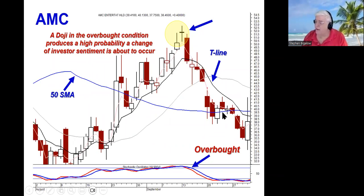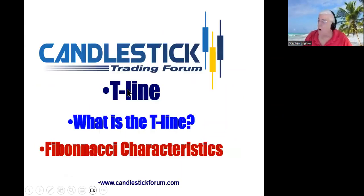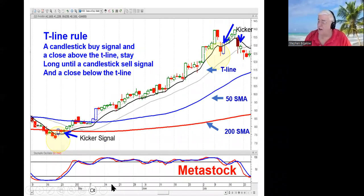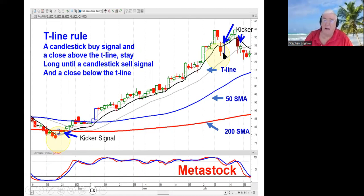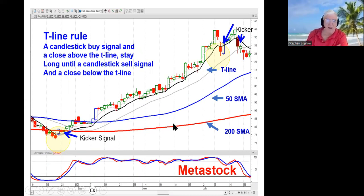Before I start the presentation, there are a couple elements you want to be aware of, and that's the T-line. The T-line is the eight exponential moving average, and it has Fibonacci characteristics. The T-line rule says if you see a candlestick buy signal and a close above the T-line, you can stay long until you see a candlestick sell signal and a close back below the T-line. This takes emotional trading out of your trading, whether you're trading off a one-minute, five-minute, ten-minute intraday chart or a daily, weekly, monthly for longer term.